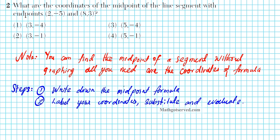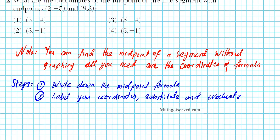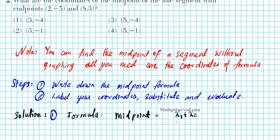These are the steps we're going to use. First, write down the midpoint formula — it's important to write it down so you do not switch the coordinate values. Then label your coordinates, substitute into the formula, and evaluate your midpoint. The midpoint formula is: the average of the x-coordinates, x1 plus x2 over 2, and the average of the y's, y1 plus y2 over 2.